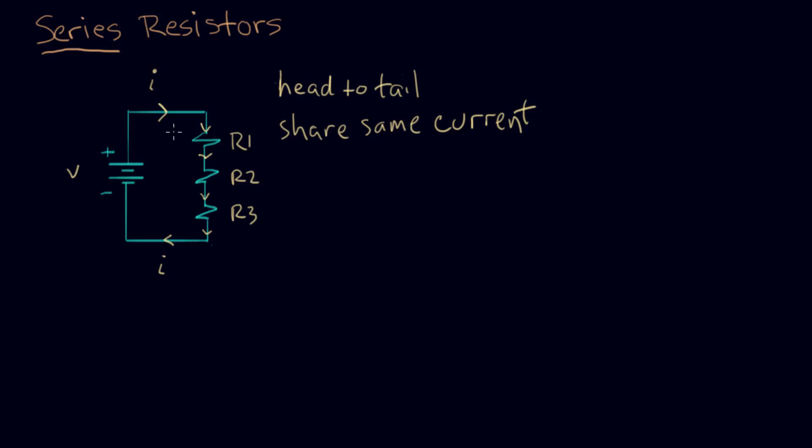That's the key thing. The thing that we don't know that's different between each resistor is the voltage here and the voltage here. Let's call that V1, this is V2 plus minus, and this is V3 plus minus.